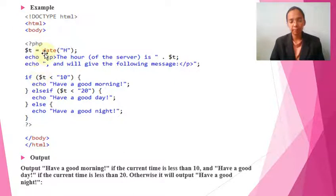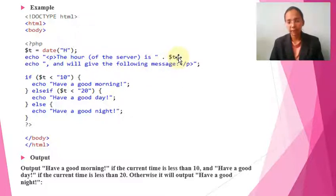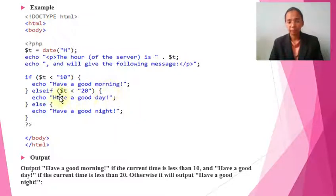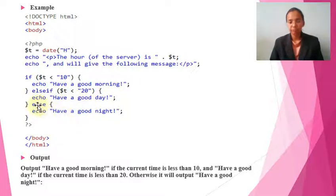Here we have the HTML tag, body tag, and PHP. Same as before, we take the date data type and get the hours into a variable. Here we print 'The hours of the server is' followed by the time value. Then: if time is less than 10, the message is 'Have a good morning'; else if time is between 10 and less than 20, the message is 'Have a good day'; else — if time is 20 or above — 'Good Night' is printed.